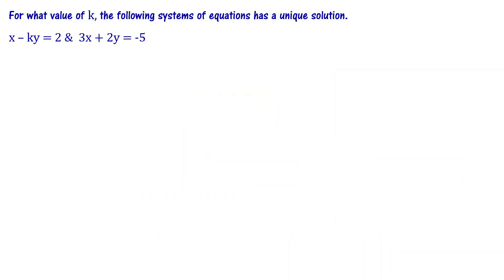For what value of k does the following system of equations have a unique solution: x minus ky equal to 2, 3x plus 2y equal to minus 5. This is a pair of linear equations in two variables.